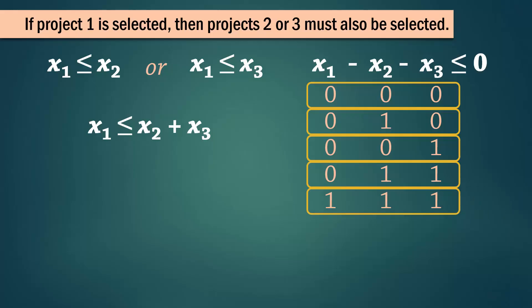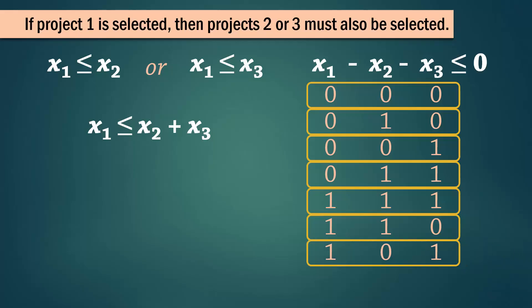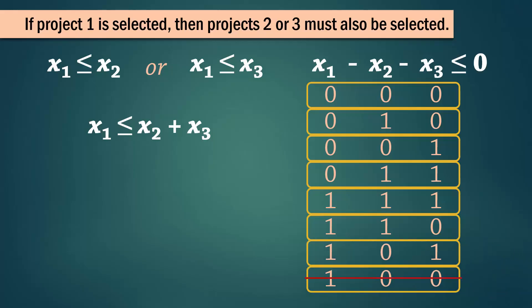And we can have project 1 as long as we have 2 and 3. We can have project 1 with only project 2 or with only project 3. We just can't have project 1 by itself.